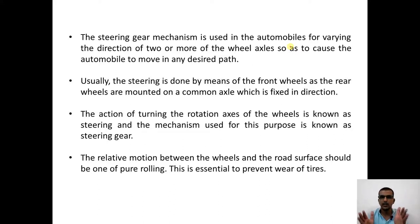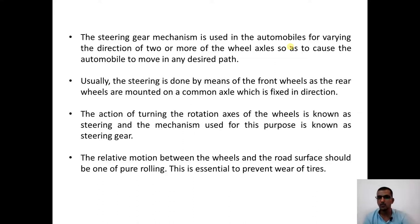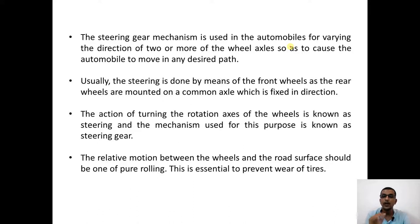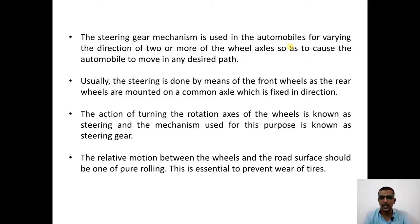The action of turning the rotation axis of the front wheels is called steering, and the mechanism used for that purpose is called the steering gear mechanism. One thing that has to be kept in mind is that the relative motion between the wheel and the road surface should be pure rolling — this is essential to prevent wear of tires. If there is no pure rolling, there will be skidding, which leads to rapid wear, reducing tire life from 30,000–40,000 km down to 15,000–20,000 km.